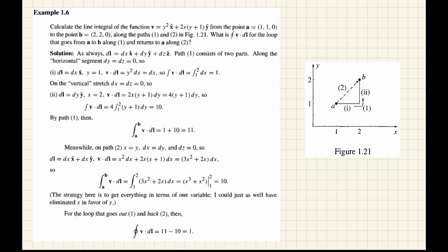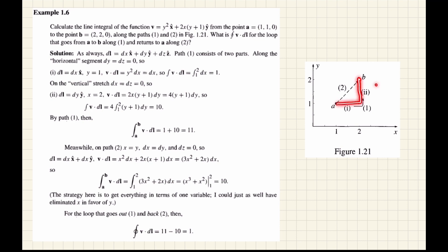Now, going back along this path in the negative (downward) direction gives a value of minus 10. So the closed line integral equals 11 minus 10, which gives 1. Therefore, the closed line integral of v·dl is equal to 1.